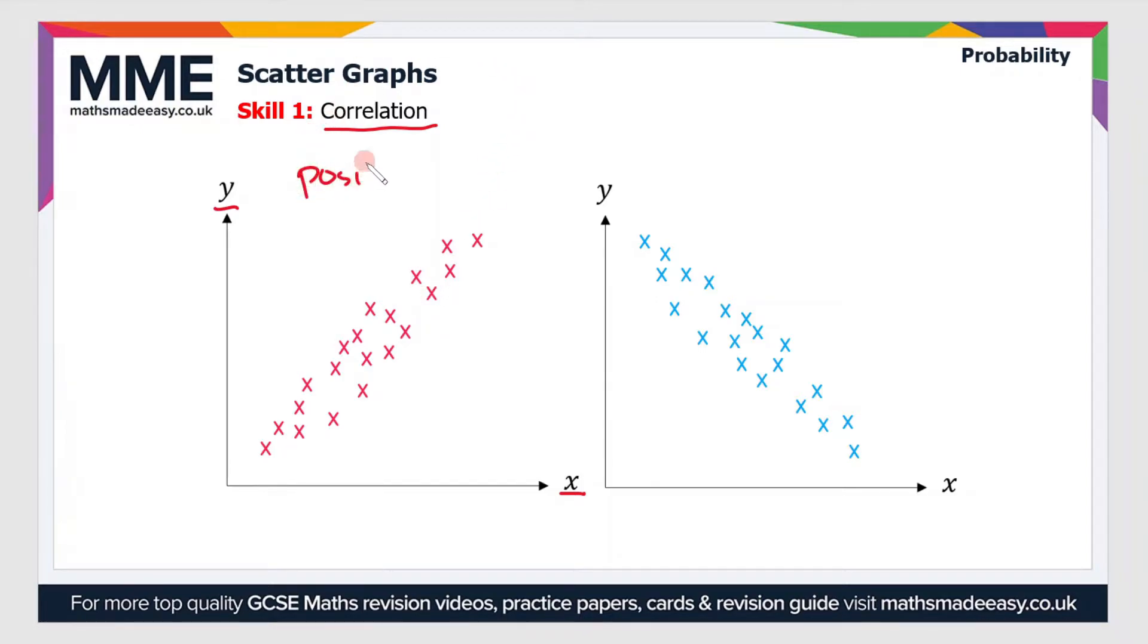Similarly, if x increases as y decreases, then we can say that there's a negative correlation. Now we can also describe the strength of a correlation, and the way we do that is we assess how well grouped the data is, so how tightly packed are our data points.